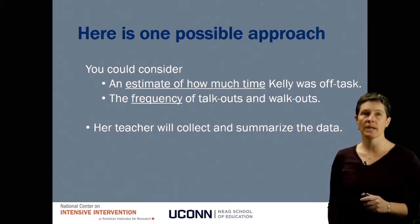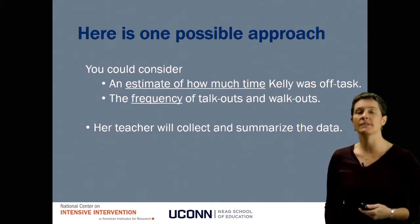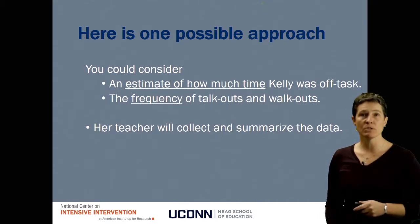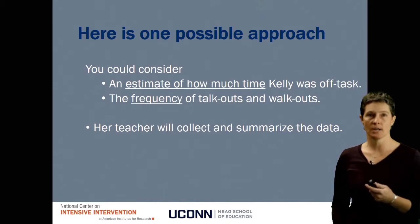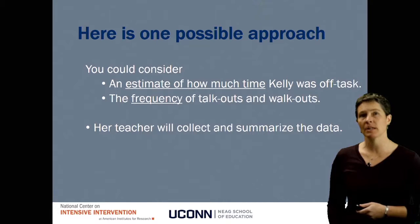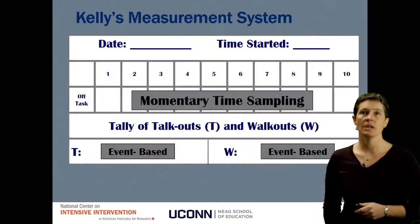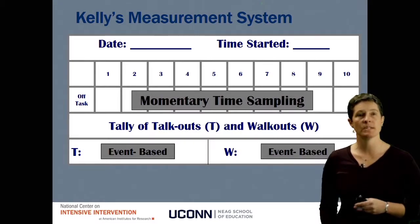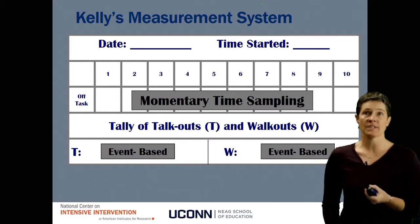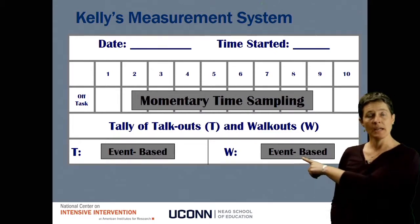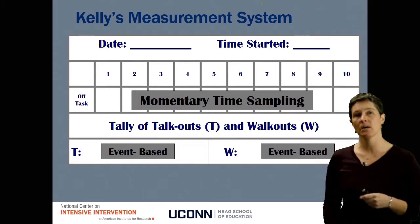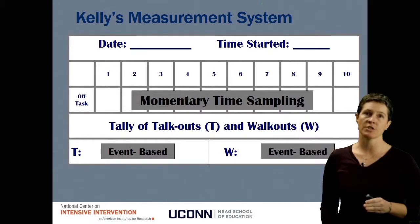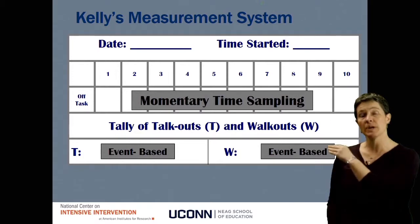Here's one possible approach — there's more than one answer. You could consider estimating how much time Kelly was off task, and counting the frequency of talk outs or walk outs. Her teacher will need to collect the data, so it has to be feasible. Using momentary time sampling for off-task behavior, the teacher simply looks up at the end of each interval and marks whether Kelly is off task. On the bottom part of the form, tally the number of times she talks out or walks out of the classroom. It's a simple measurement system that captures all three behaviors in a pretty feasible way.